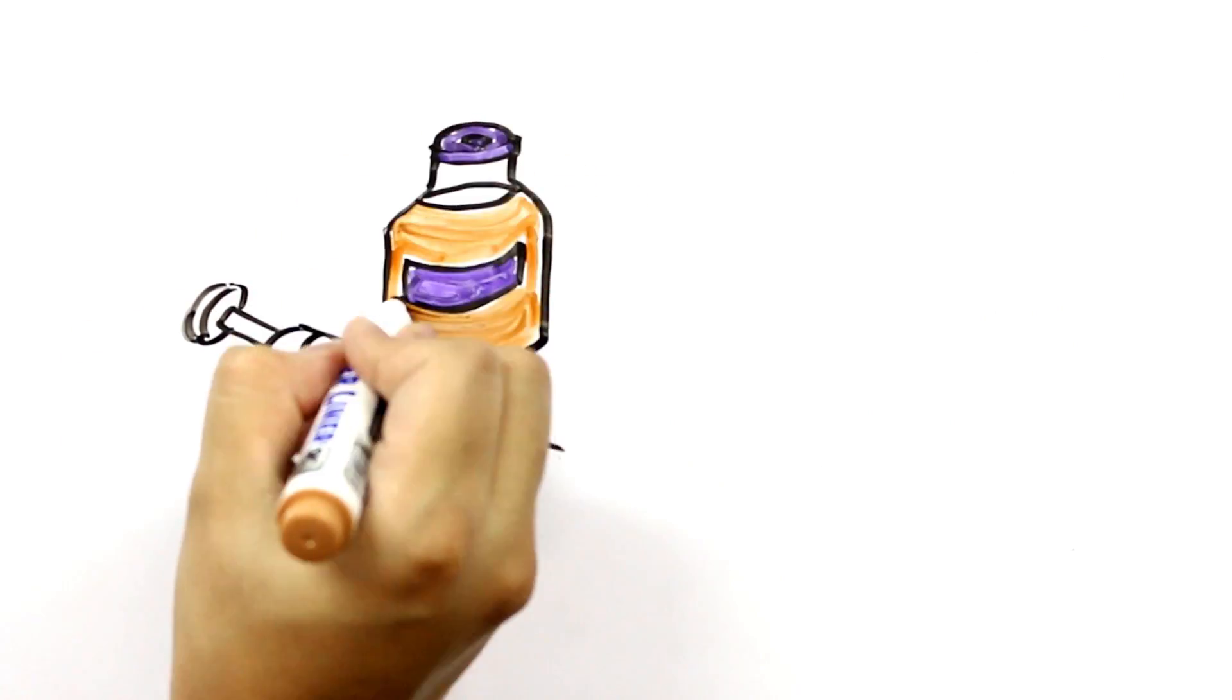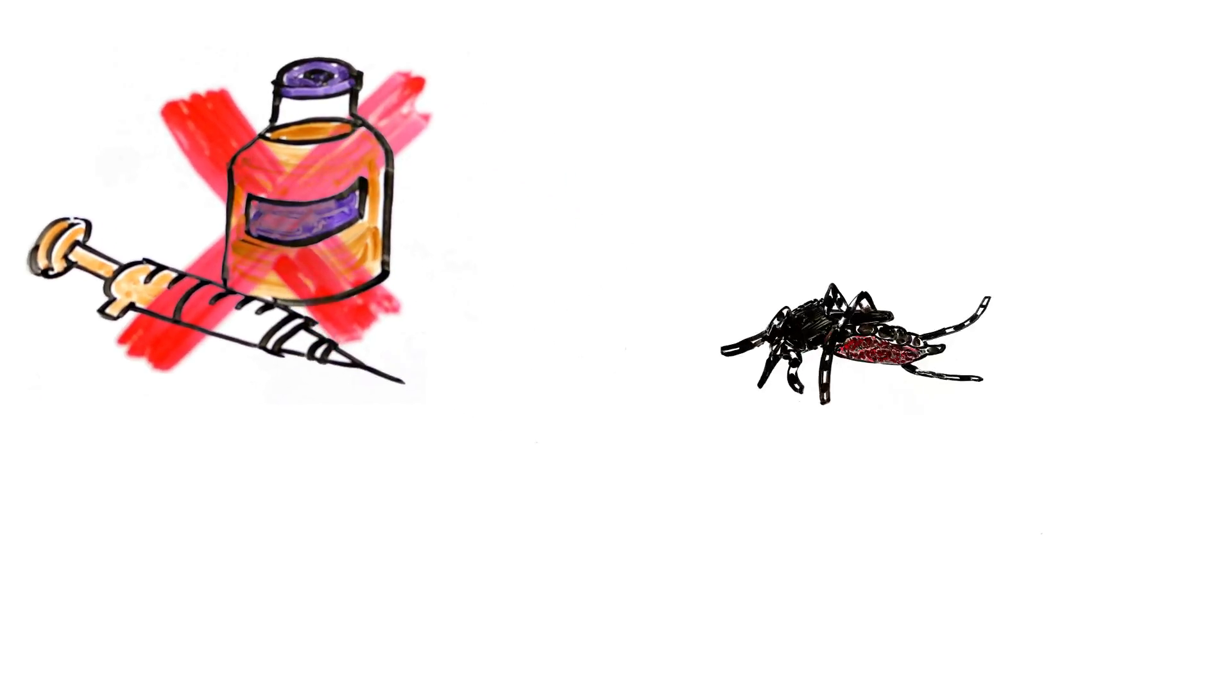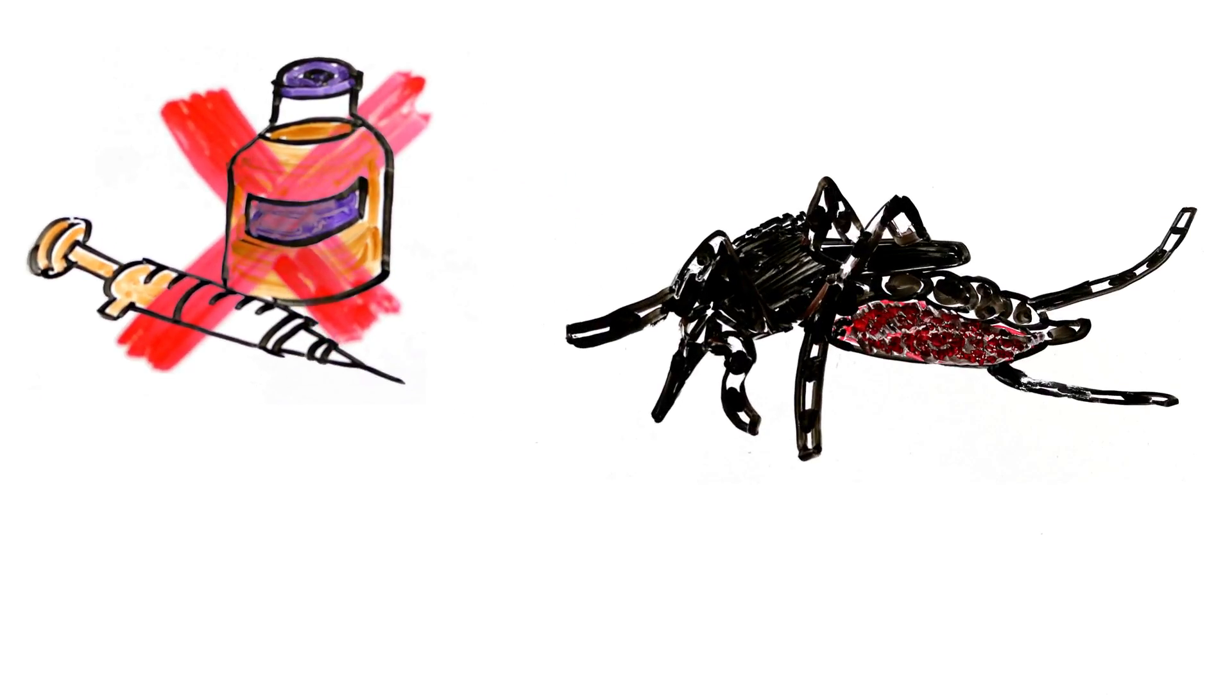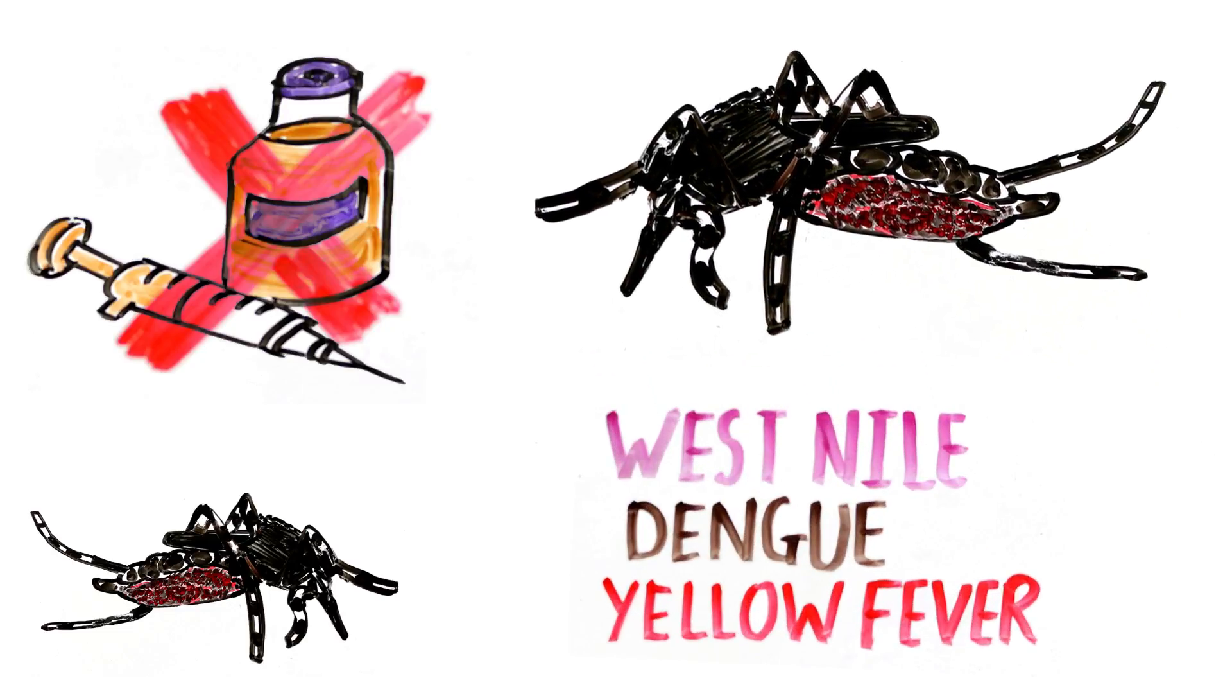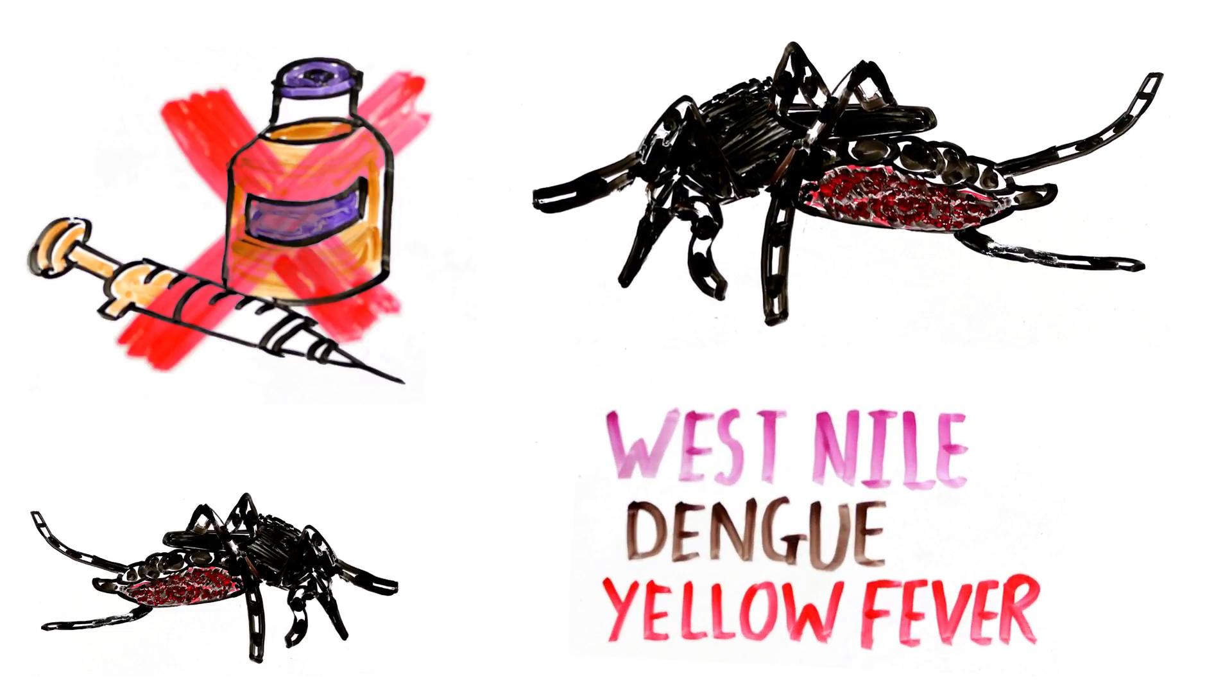There is no vaccine or medicine to prevent Zika. It is an arbovirus which means it's passed through people by insects. More narrowly, it's part of the flavivirus family which includes West Nile, Dengue and yellow fever.